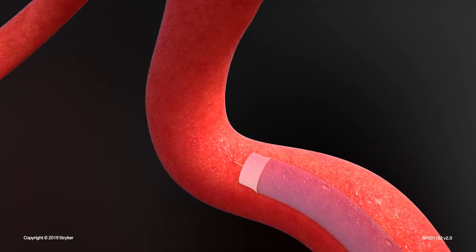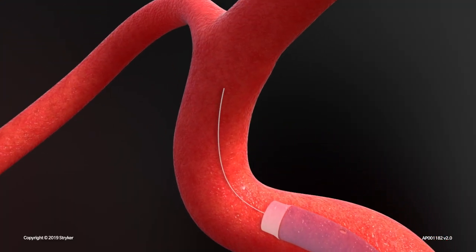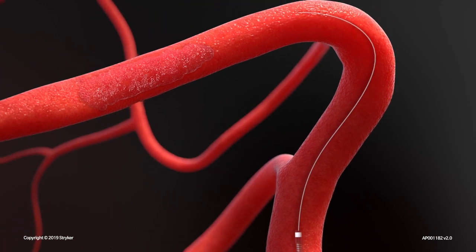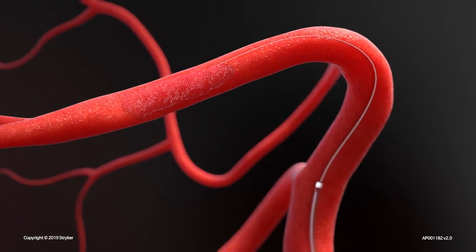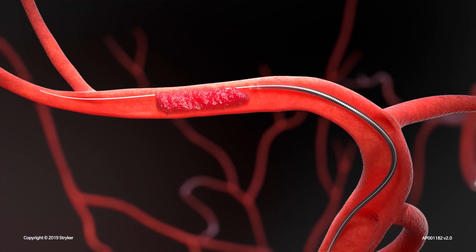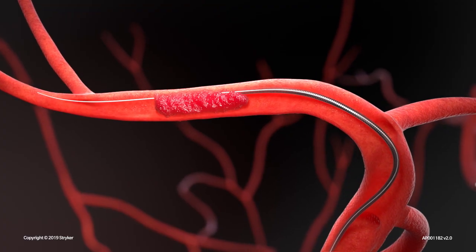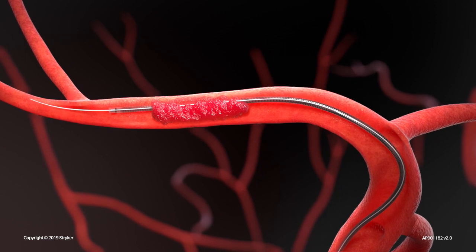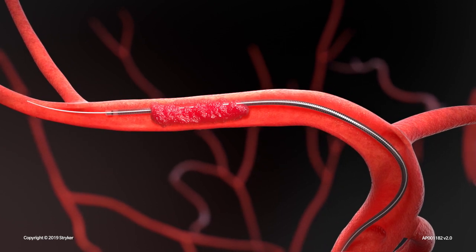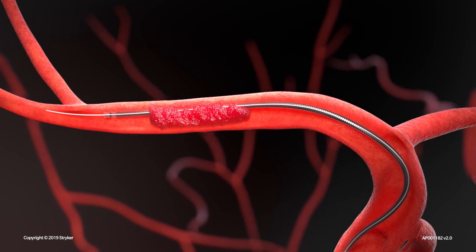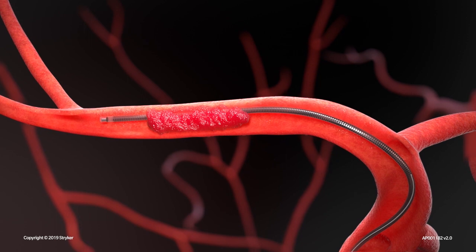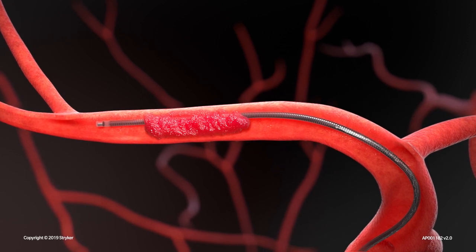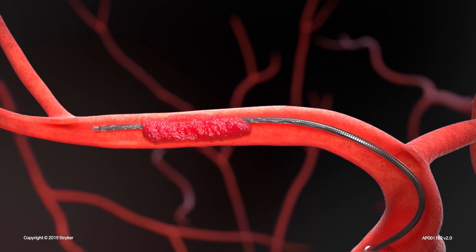The balloon guide catheter helps control blood flow to the brain during the retrieval procedure. With the aid of a guide wire, the microcatheter is advanced through the occlusion and positioned distal to the clot. The guide wire is then removed and the Trivo Retriever is advanced through the microcatheter.